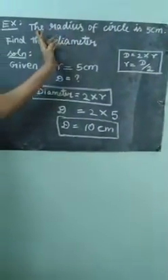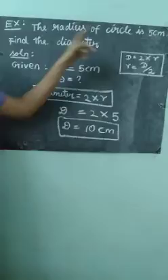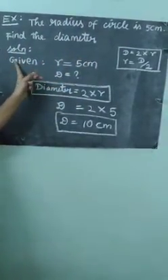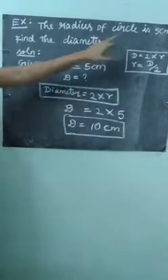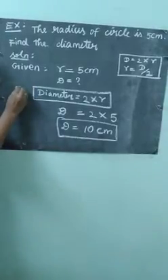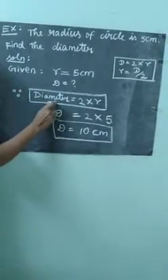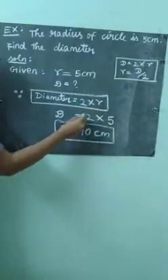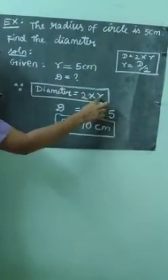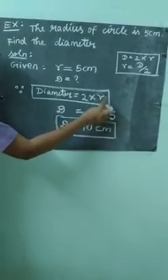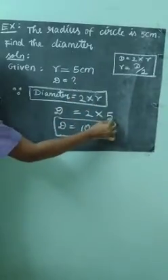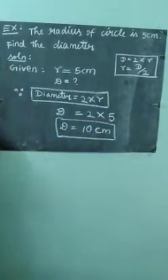Once again: the radius of the circle is 5 cm, find the diameter. Given: r = 5 cm, find d. Write the formula: diameter = 2 × r. So d = 2 × r. Replace r with 5: two fives are ten centimeter. Finally, diameter = 10 cm.